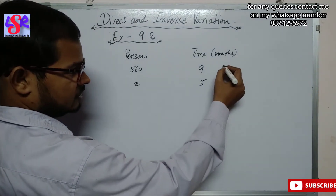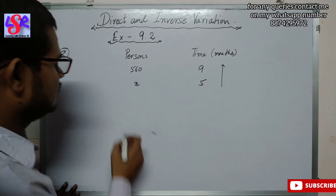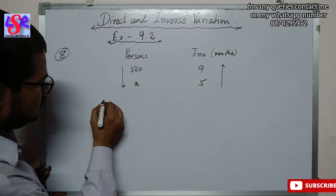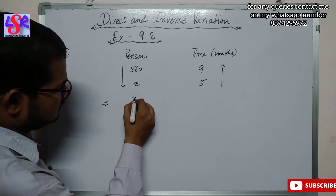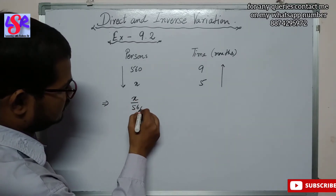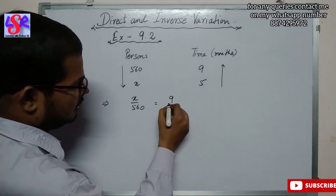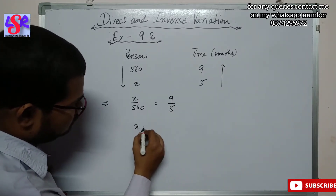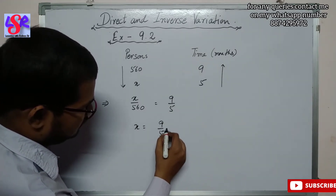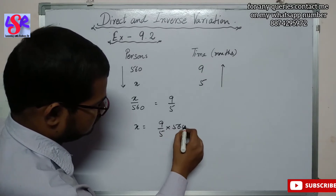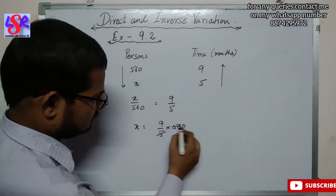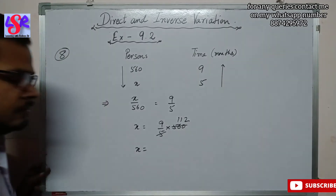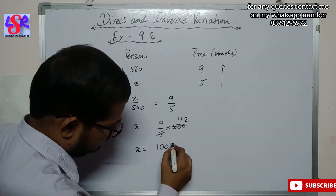We put an arrow in the downward direction because 9 is greater than 5. Now putting this in equation form: x / 560 = 9 / 5. So x = (9 / 5) × 560. Dividing 560 by 5 gives 112, and multiplying gives 1008.